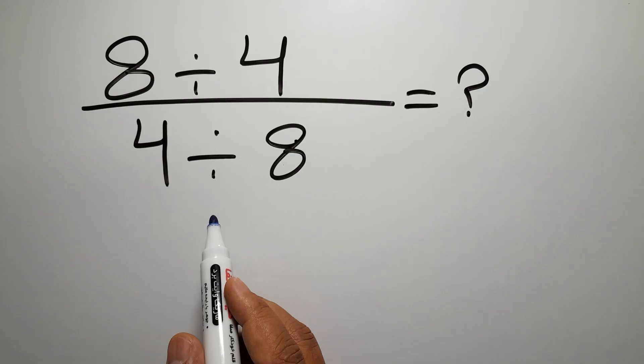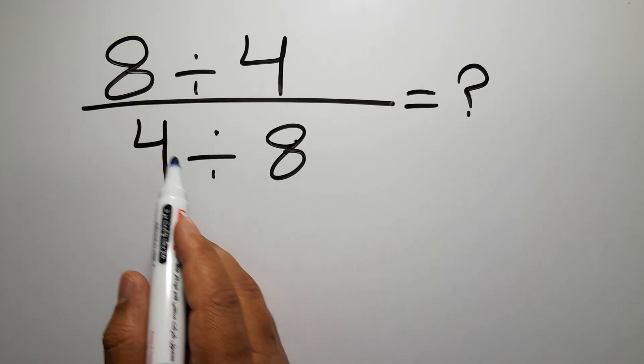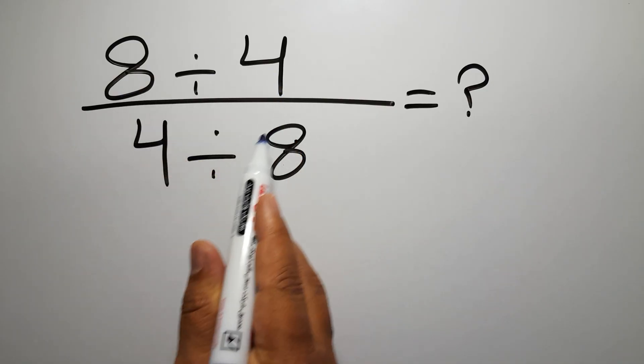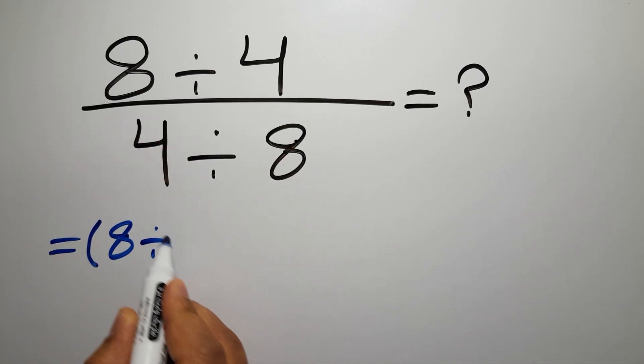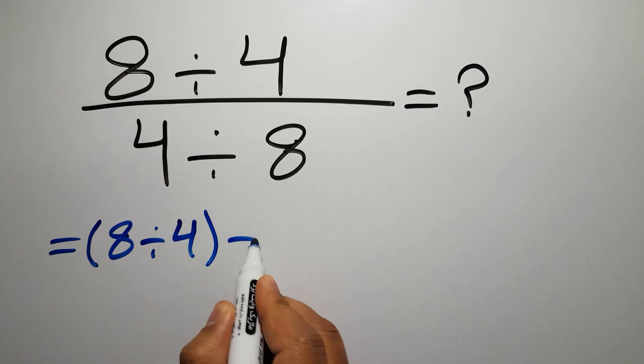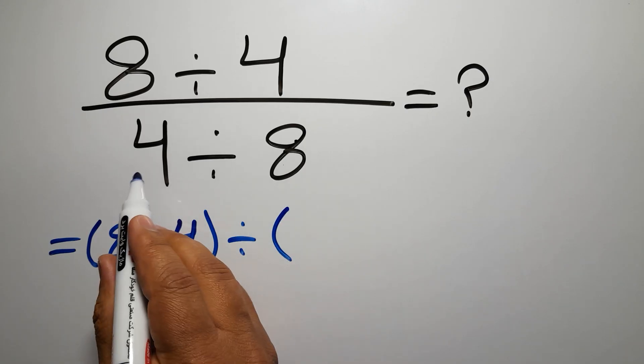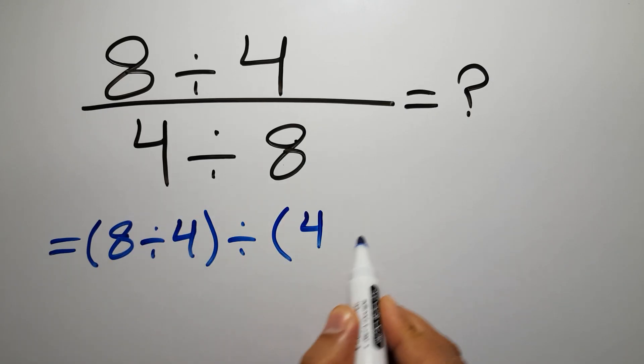Are you ready to solve? Let's go down and start it. First, instead of this fraction, we can write the numerator 8 divided by 4 divided by denominator, which is 4 divided by 8.